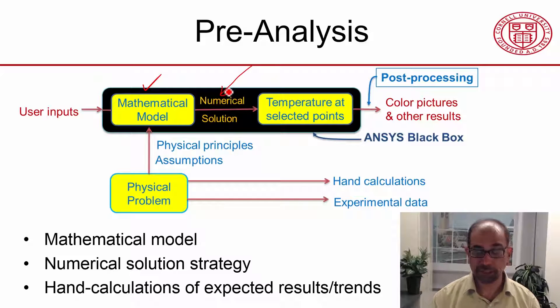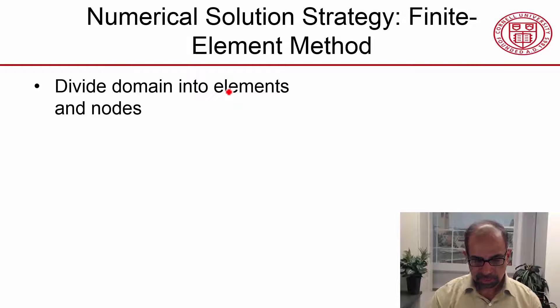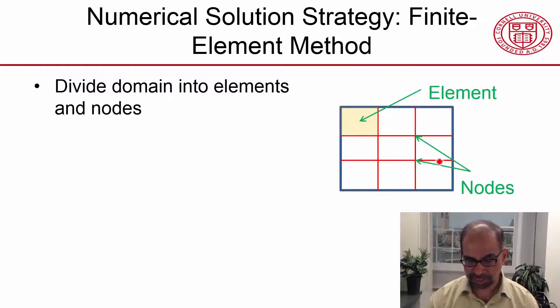We have to divide the domain into elements and nodes. We have a rectangular domain here, and we divide it into nine little chunks. Each little chunk is called an element, so here I've highlighted one element.